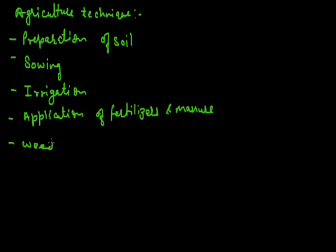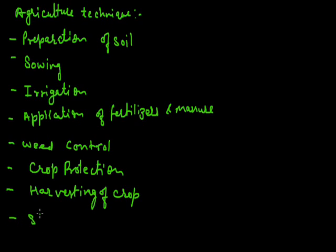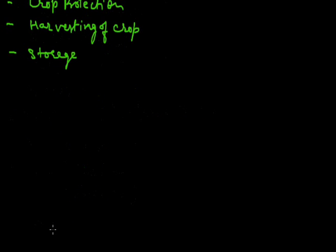Next is weed control. Weeds are the unwanted plants, and weed control is very important for controlling unwanted plants in the agriculture field to get more production. Next is crop protection from insects. Then harvesting of crops, and last is safe storage of food grains. These are the techniques used by farmers for growing crops.